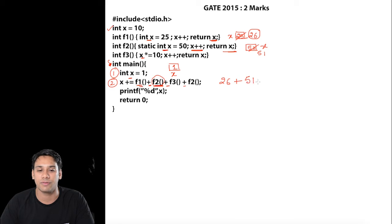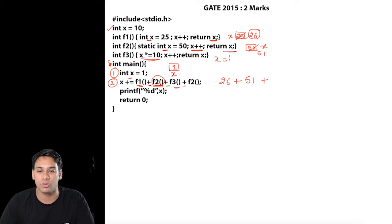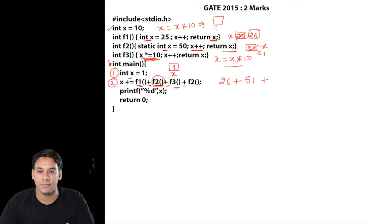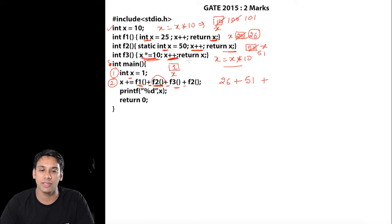Then we execute the f3 function. In f3 we do x *= 10, which means x = x * 10. This x is the global variable whose value is 10, so x becomes 10 * 10 = 100. Then we increment x, making it 101, and then we return this value — so f3 returns 101.